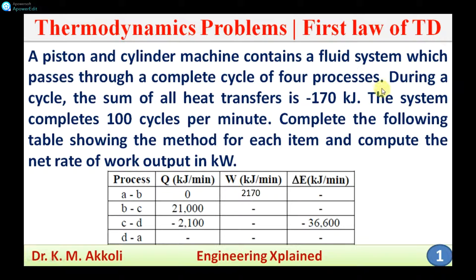Hello everyone, welcome to this session. I am going to discuss a thermodynamics numerical problem on the first law of thermodynamics. The problem states that a piston and cylinder machine contains a fluid system which passes through a complete cycle of four processes. During the cycle, the sum of all heat transfers is minus 170 kilojoules. The system completes 100 cycles per minute.